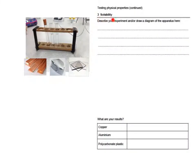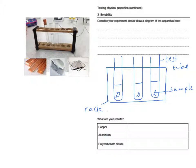Experiment three is looking at the solubility of copper, aluminium and polycarbonate plastic. A brief description of what you'd do is here, and a diagram underneath. What you'd do is put a small sample of each of these three materials into a test tube, and add a small amount of water, say half full, and observe over time whether they dissolve or not.